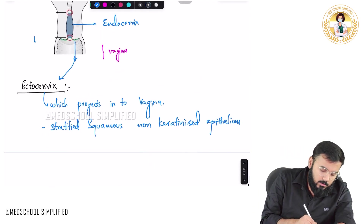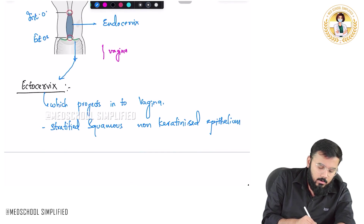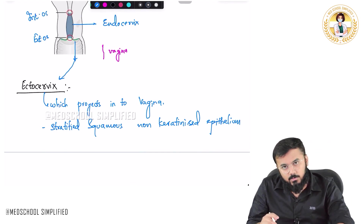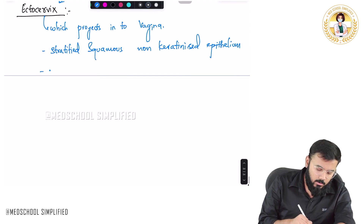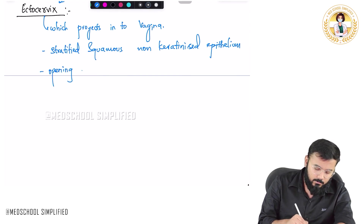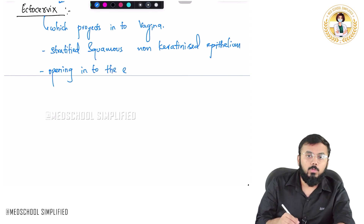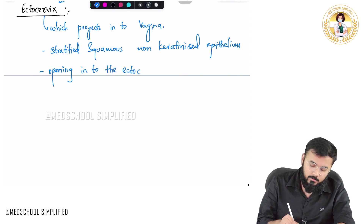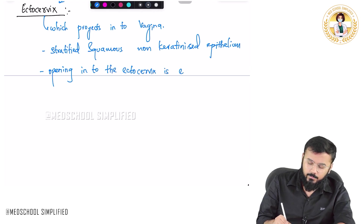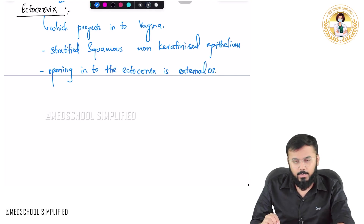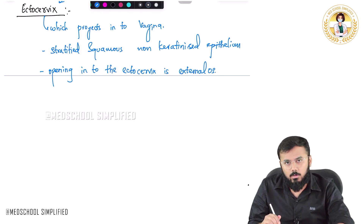Opening into the ectocervix is the external os — you see, this is called the external os, and this is called the internal os. Opening into the ectocervix you have got the external os.